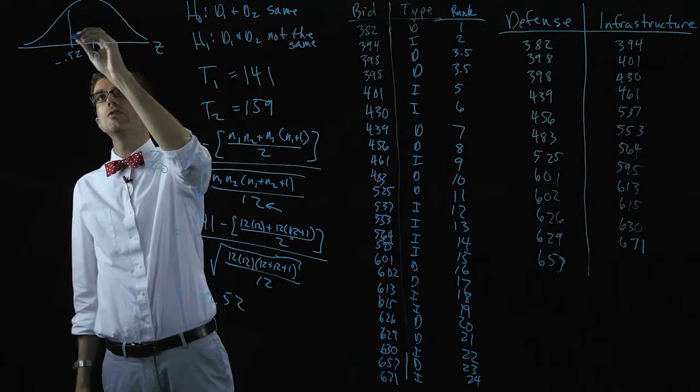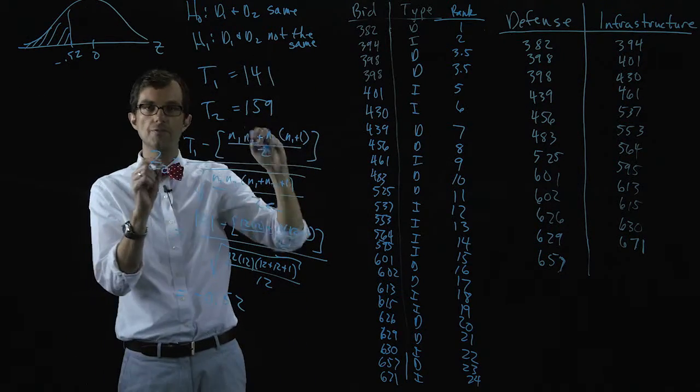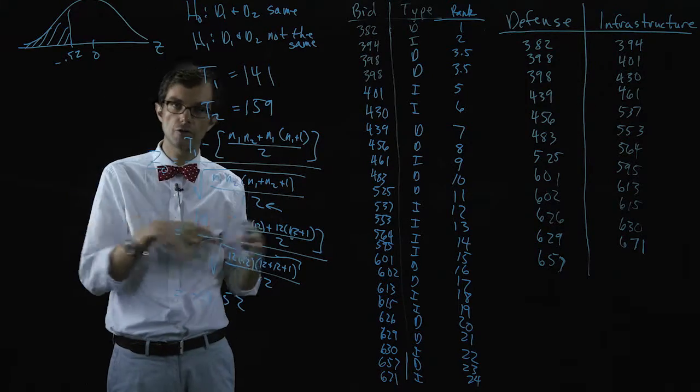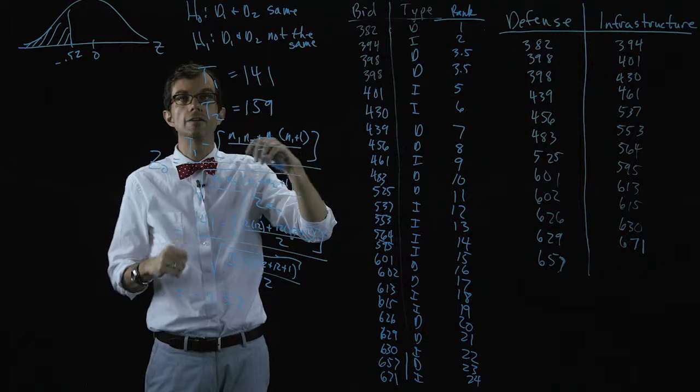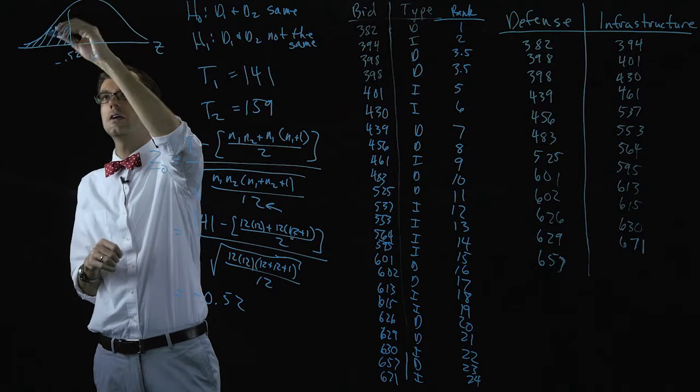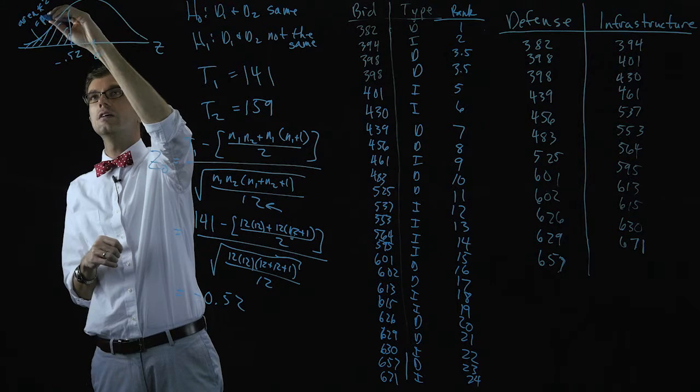Let's say we want to use the p-value approach. This is a two-tailed test. We're not specifying is d-one less than or greater than, we're just saying is it different from. It could be less or greater. So this area multiplied by two is the p-value.